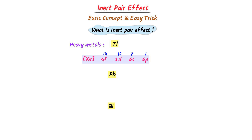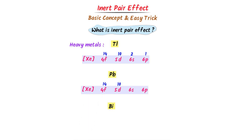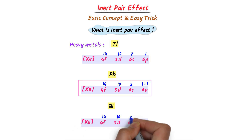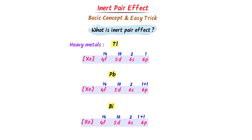Similarly, the electronic configuration of lead is the same as thallium's with one more electron added to the 6p orbital. In the case of bismuth, I take the electronic configuration of lead and write it as it is, adding only one more electron to the 6p orbital.